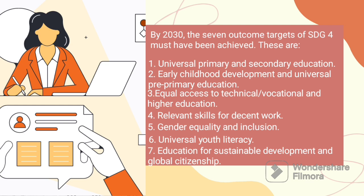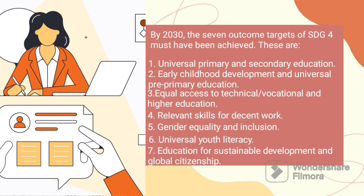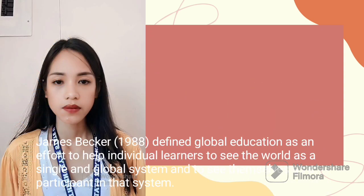Based on the seven outcomes of SDG, the target that needs to be achieved is to increase the supply of qualified teachers through international cooperation for teacher training in developing countries, especially the less developed countries and island developing states. As James Becker defines it, global education is an effort to help individual learners to see the world as a single global system and see themselves as participants in that system — a school curriculum with a worldwide standard of teaching and learning.